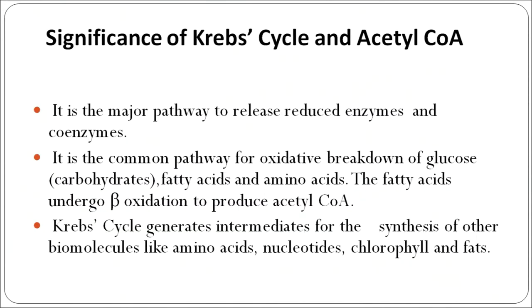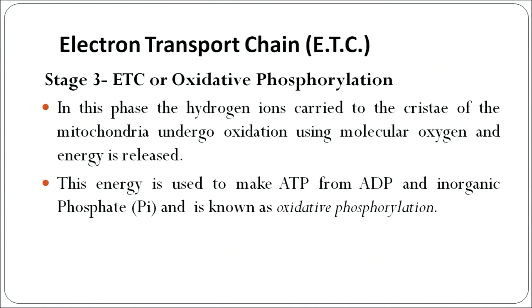The significance of the Krebs cycle and acetyl coenzyme A is that during this process, lots of reduced enzymes and coenzymes are produced. When fatty acids are used, they are oxidized by beta oxidation. The intermediates released in the Krebs cycle are used in the synthesis of various biomolecules such as amino acids, nucleotides, chlorophyll, and fat molecules, which are essential for cellular metabolism. The third stage of respiration is the electron transport chain, also known as ETC or oxidative phosphorylation.